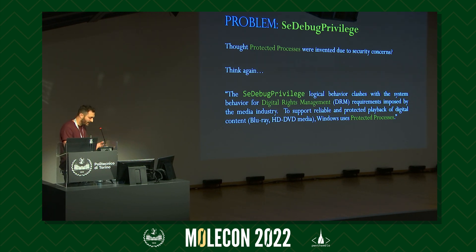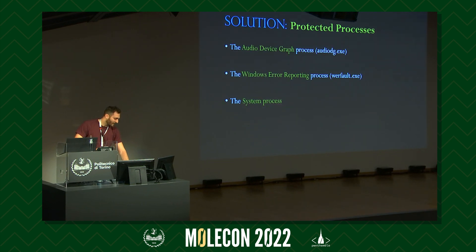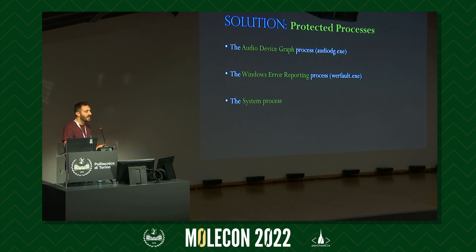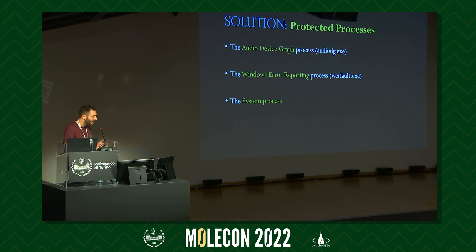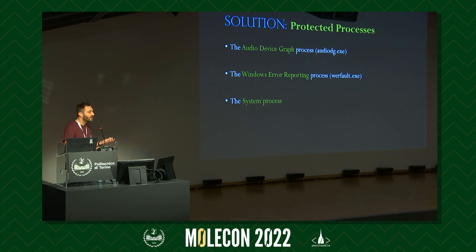Protected process was born to prevent users from accessing protected digital content. A protected process can be created only if the executable image is signed with a special Windows Media Certificate. Examples of protected processes running on your PC include the audio device process, which hosts and decrypts DRM-protected content on the fly, as well as the system process. The system process must be protected because it stores decryption information generated by the kernel security provider, and all security and kernel handles are stored there as well.